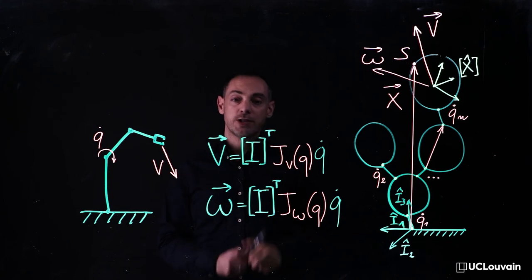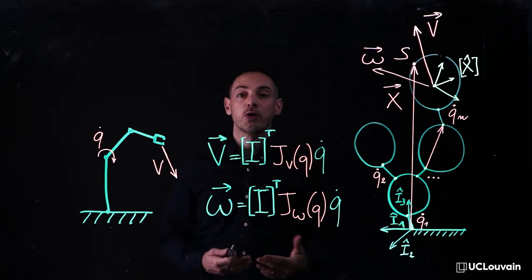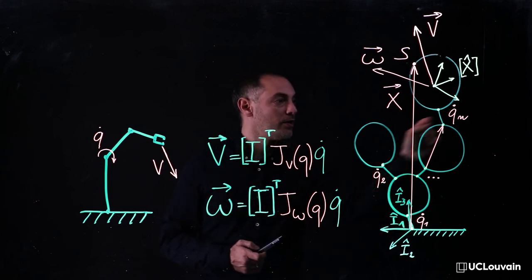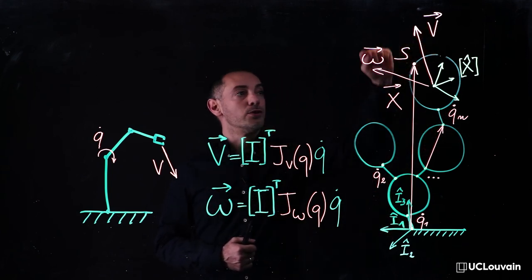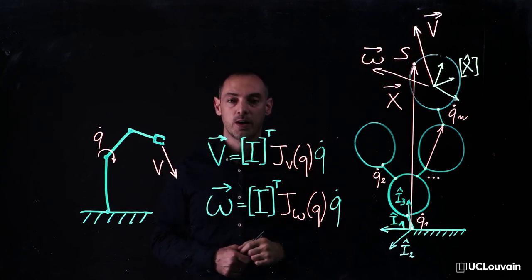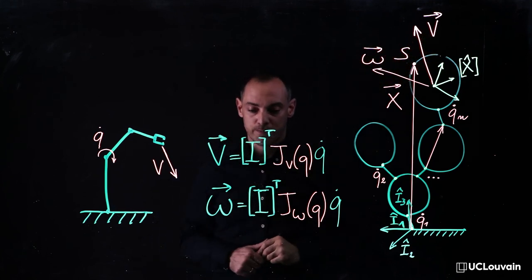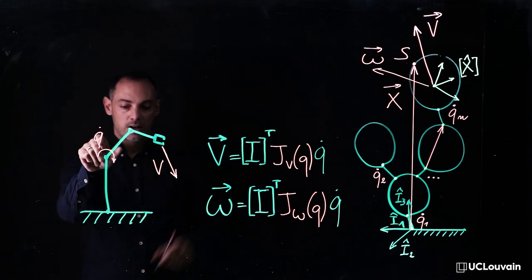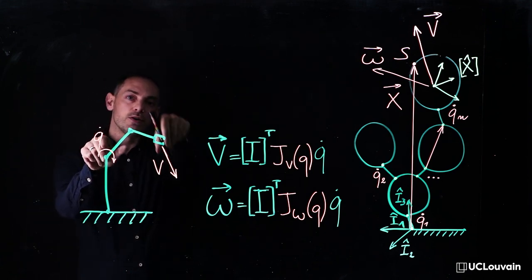These matrices are of the utmost importance since they represent the mapping from the relative velocities to the absolute velocities. For example, in robotics, it enables to link the joint velocities with the end effector velocity.